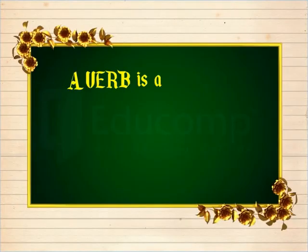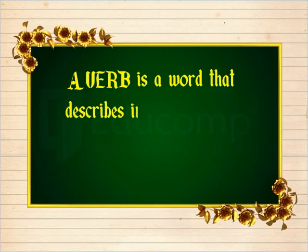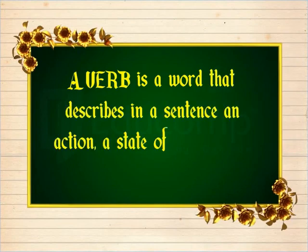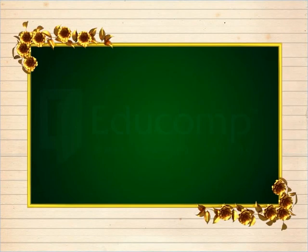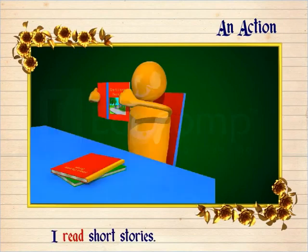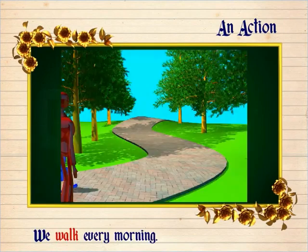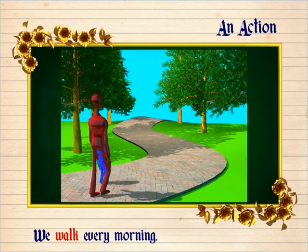A verb is a word that describes in a sentence an action, a state of being, or an occurrence. An action such as: I read short stories, we walk every morning.